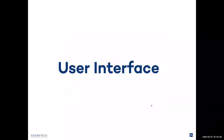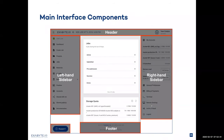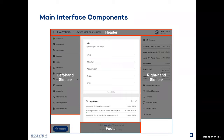Let's now speak about the user interface and its main components. Once you log in to the platform, you'll find four main components of the general user interface: the header, left-hand sidebar, the footer, and right-hand sidebar. There is also a support widget for any kind of questions to our support team, located in the bottom left corner.